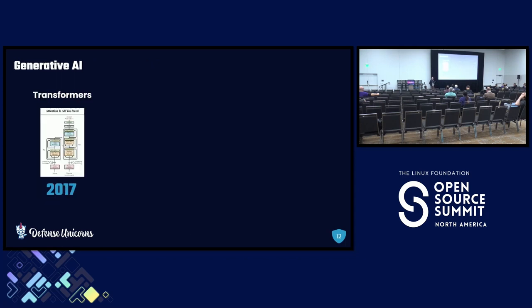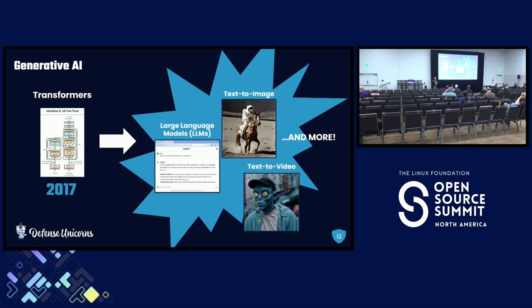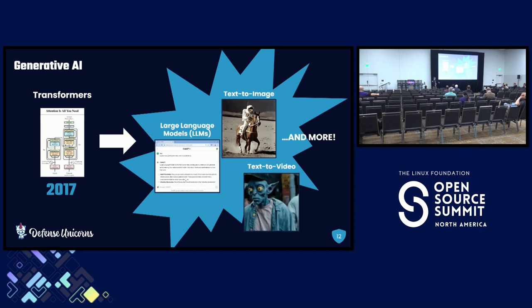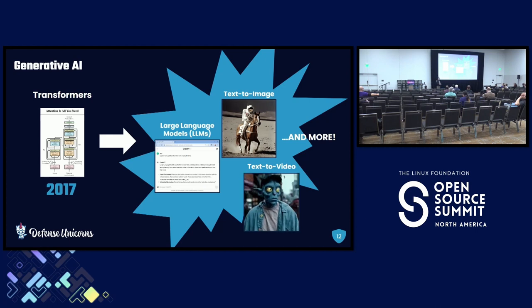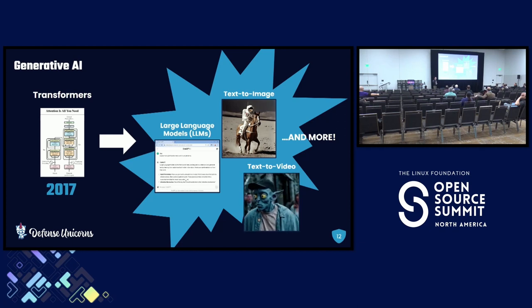Then we get to 2017, which is a pivotal moment. A bunch of researchers at Google put out a paper titled 'Attention is All You Need,' where they described the Transformer Network, which really forms the foundation for all of the big generative AI explosion we've seen over the past few years. This is where the large language models — things like ChatGPT — come from, as well as text-to-image generation models like Stable Diffusion and MidJourney, and text-to-video models like OpenAI's Sora. The ability to generatively produce new content really has its foundation going back to 2017.